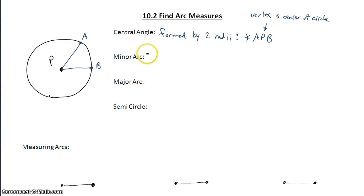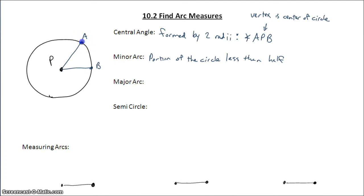A minor arc is a portion of the circle that is less than half. If we look at this picture, we have a minor arc that goes from point A to point B — it's this portion of the circle, not the line segment AB, but the arc AB. The notation for a minor arc: we start at point A and go to point B, and instead of a line segment, we use an arc.